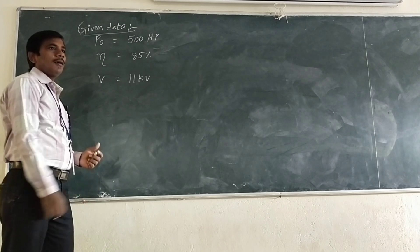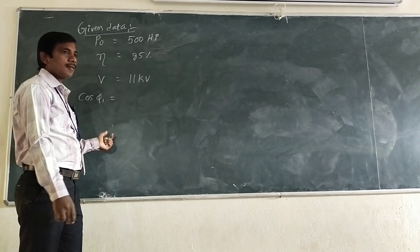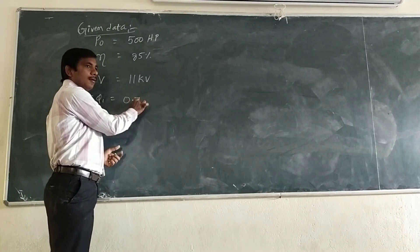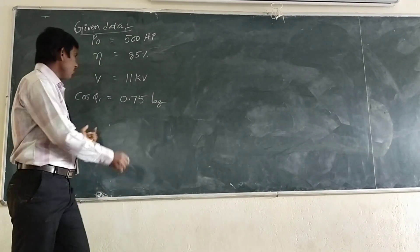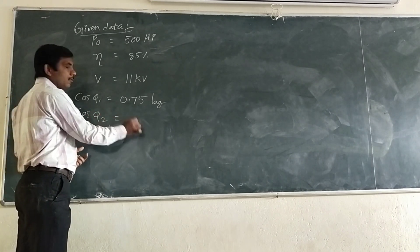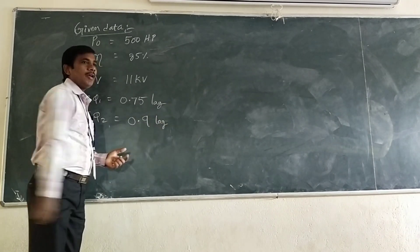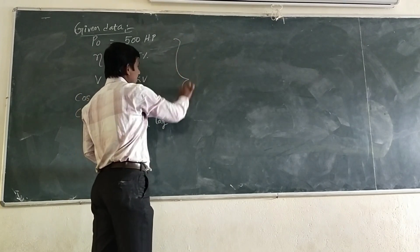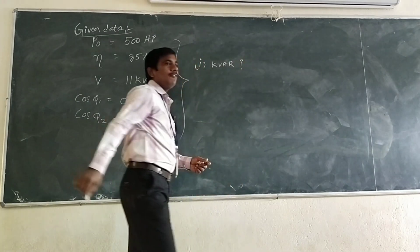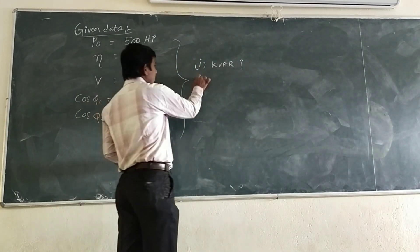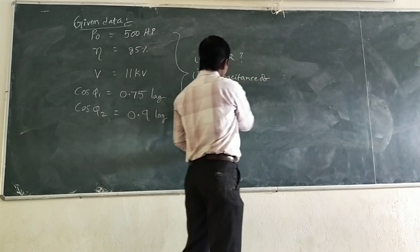The supply voltage is 11 kV. Initially, what is the power factor? The initial power factor, cosφ₁, is 0.75. We have to improve the power factor to cosφ₂ equal to 0.9. We have to connect capacitors in star as well as delta. The second item to find is the capacitance of each unit — in star and delta.